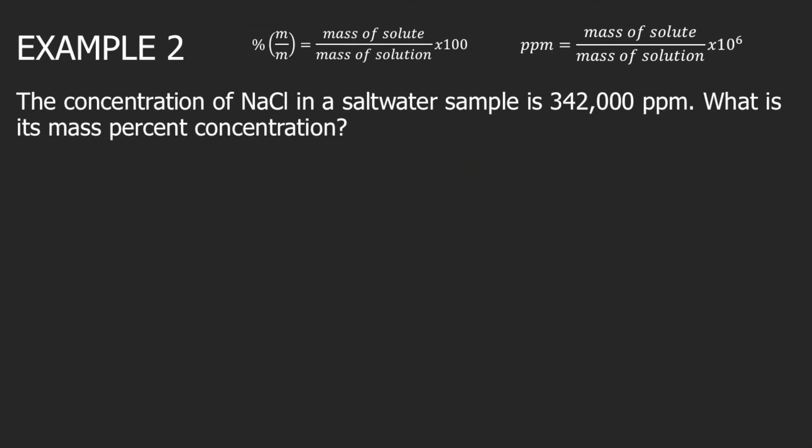Example two: the concentration of NaCl in a saltwater sample is 342,000 PPM. What is its mass percent concentration? In this problem, we are given PPM — 342,000 — and we will convert this to mass percent.